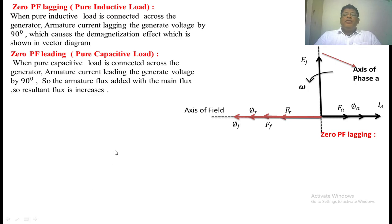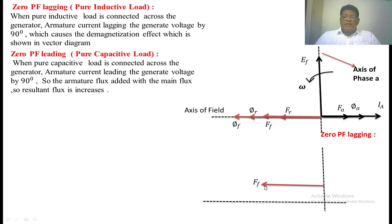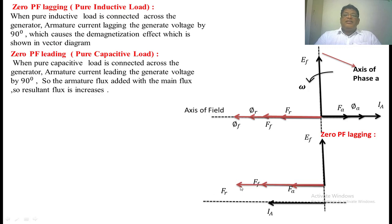Next, zero power factor leading — that means connecting a pure capacitor load across the generator. The current leads the excitation voltage by 90 degrees. We have taken the axis of phi and the axis of phase A. We placed the main field MMF FF on the main field axis and EF on the phase A axis. Since a pure capacitor load is connected, the current leads the voltage by 90 degrees. Whenever this current passes through the stator winding, armature MMF is created in phase with IA, shown as phi-A. The resultant MMF FR increases. In terms of flux, the main flux and armature flux are in the same direction, so they add up and the resultant flux increases. If we connect a capacitor load across the generator, the resultant flux will be increased.